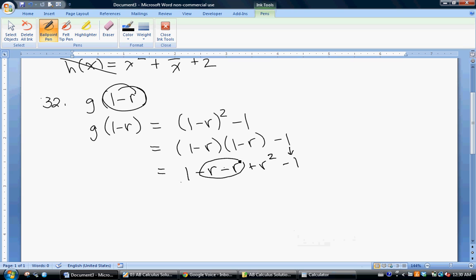And then I'm going to combine my like terms. So we get negative 2R. And you notice that this one and this negative one are going to cancel out. And so the only other thing is that R squared. And so that would be the answer for that problem.